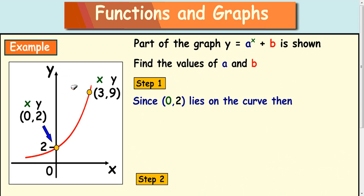Slightly harder example. In this case, we've been given two coordinates, 0,2 and 3,9. So part of the graph y equals a to the power of x plus b is shown. So it's a more complicated function that's got a plus b at the end of it. So we have to work out the values of a and b.